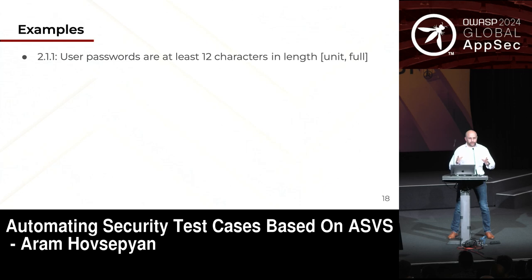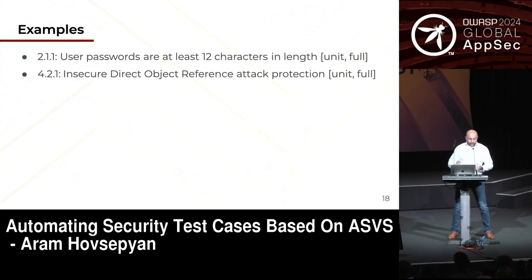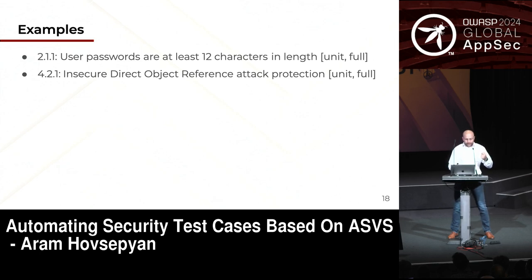By the way, if somebody asks me to define the boundary between unit and integration tests, I have to say I'm shaky on that — we have a lot of internal disagreements about where to draw that line. Another requirement is insecure direct object references — you have to protect against IDOR. You can write unit test cases for that, but it's much more complicated because you have to go into your API and check every API request. You hit some scalability issues here.